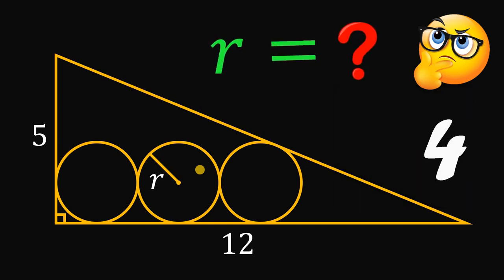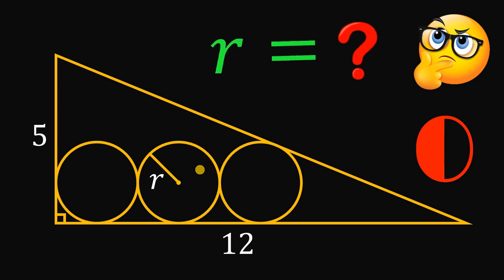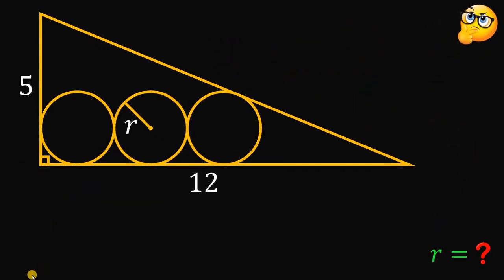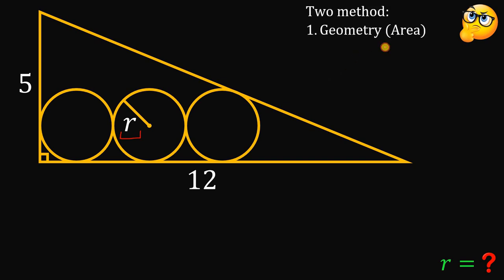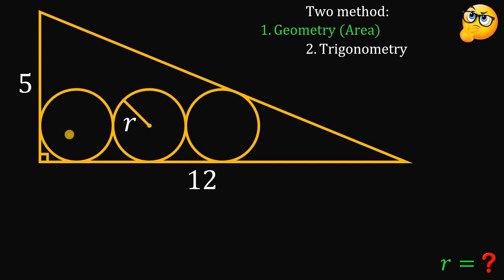Now let's answer this question together. Given this figure, our goal is to find the measure of this radius r. I will show you two different methods: the first one uses geometry, specifically the area of a triangle; the second one uses a trigonometry approach.